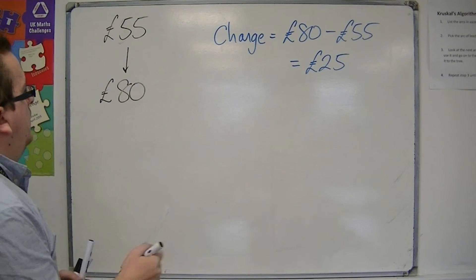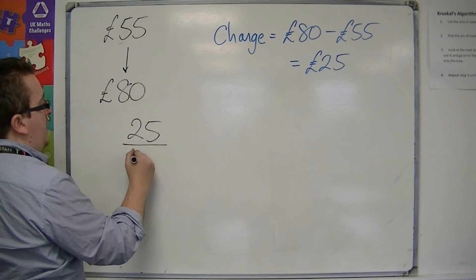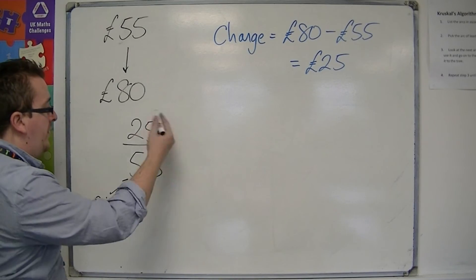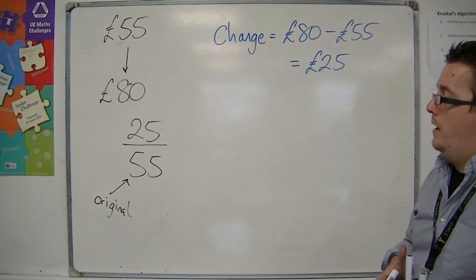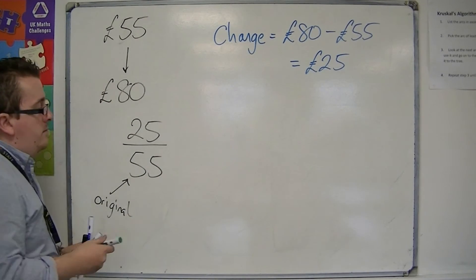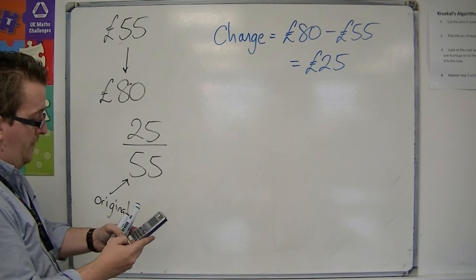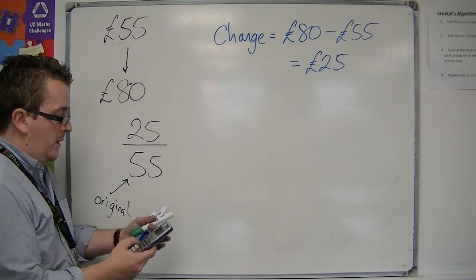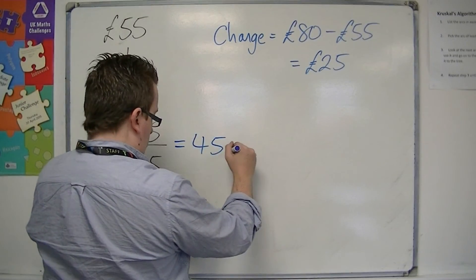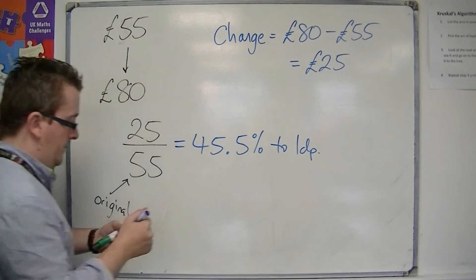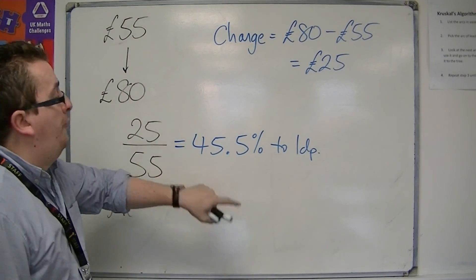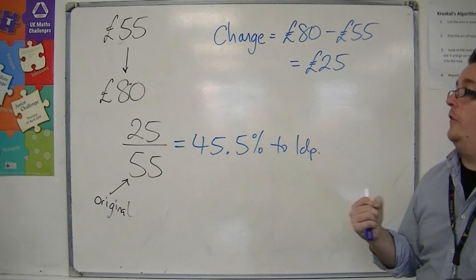We look at the percentage change as a fraction of the original amount, so 25 over 55 — remember, it's always the original amount. We want to turn this into a percentage, so we do top divided by bottom and times 100. So we're doing 25 divided by 55, then times that by 100. What we get is 45.454545%, so 45.5% to one decimal place. The shirt after the sale has gone up by 45.5% now that the sale has ended.